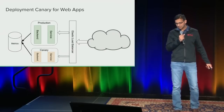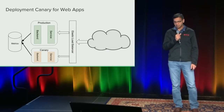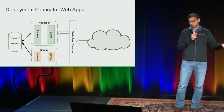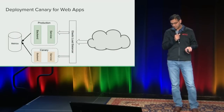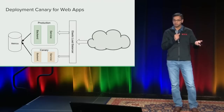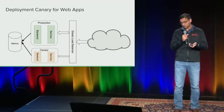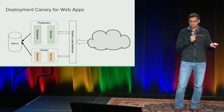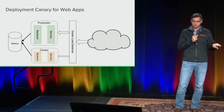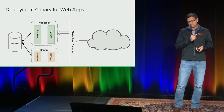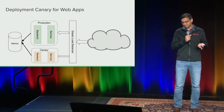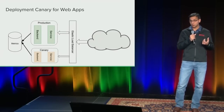Canary deployment is very popular, and we heard some of the speakers talk about it as well. Basically, you take the latest version of your software, take a few server instances, and enable them in production. These instances run in parallel with the production code, and you collect metrics and analyze them to assess the health of your latest code. Two key challenges for us: the software we own doesn't run on servers in the Netflix cloud — it runs on your laptops and PCs. Second, we don't have instant access to metrics like service applications do.